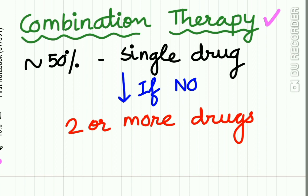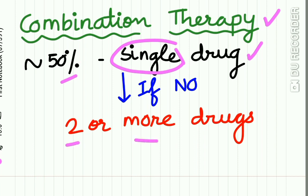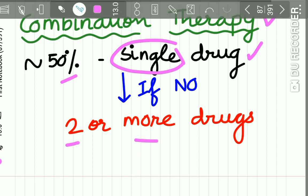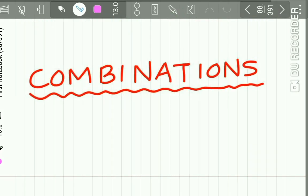Combination therapy of different drugs is used for the control of hypertension. Approximately 50 percent of patients are treated with a single drug, but if the single drug is not sufficient enough to control hypertension, two or more drugs are added to the therapy.